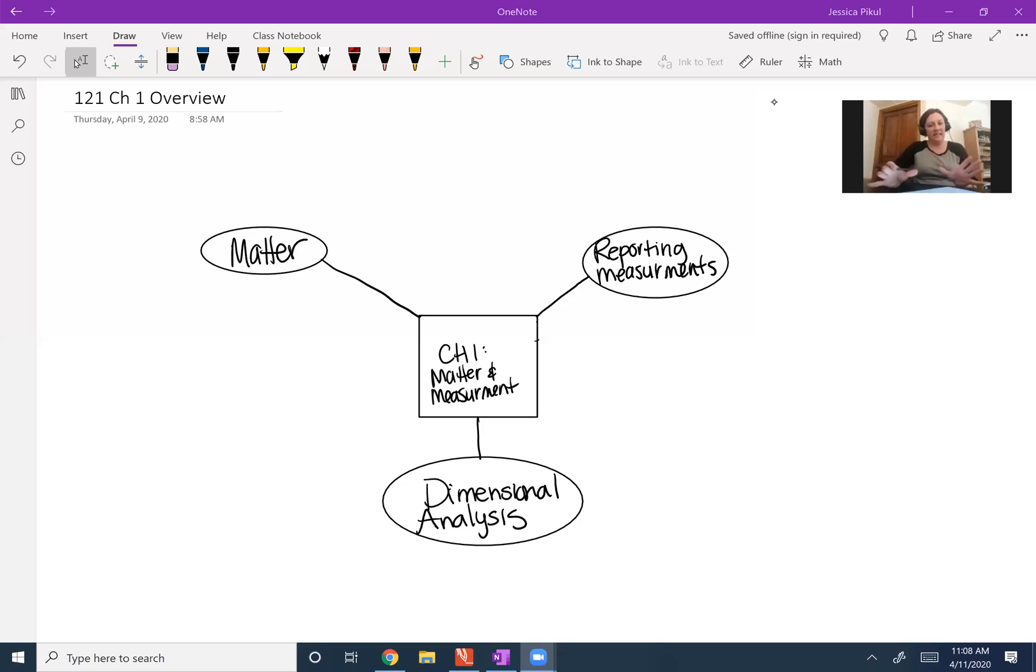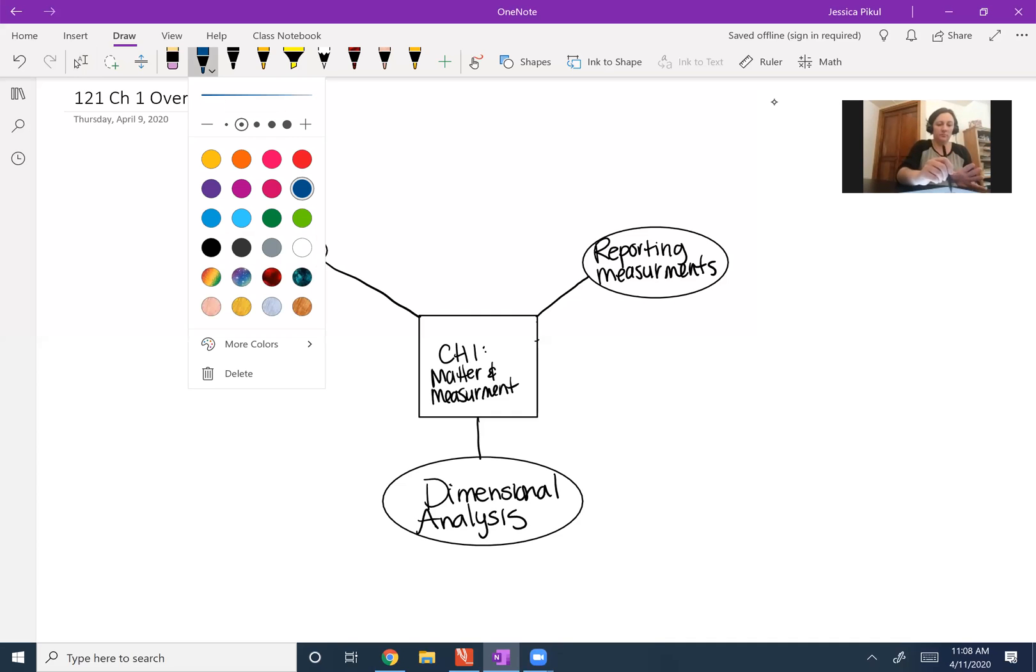So as an overview, I just want to lay things out as a concept map. Let's change our color actually. So let's start with matter.